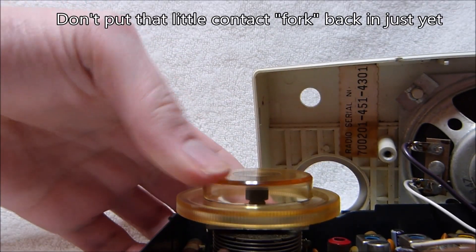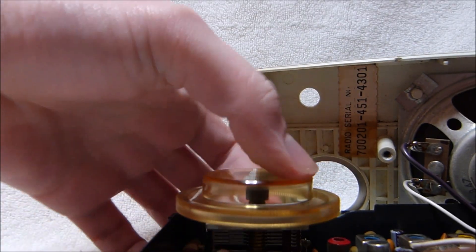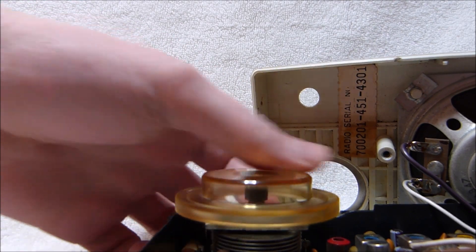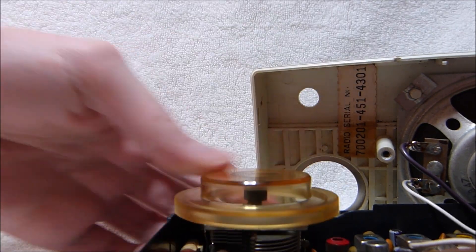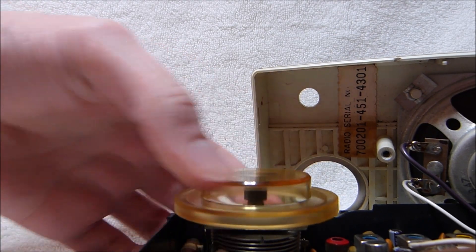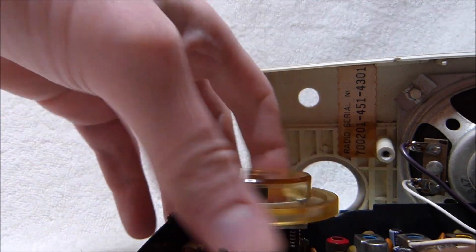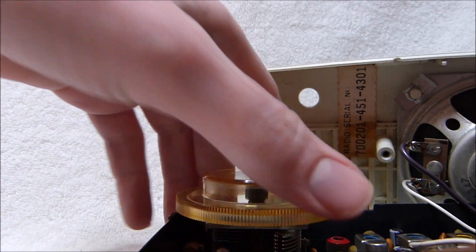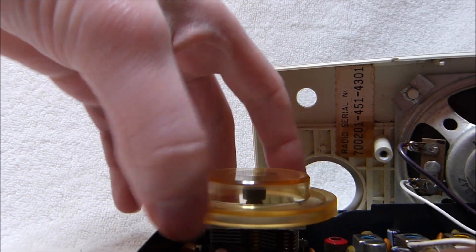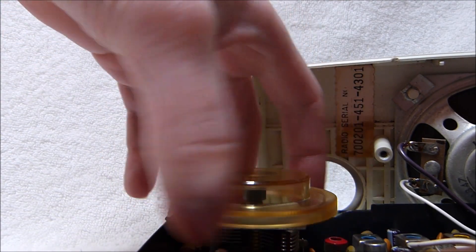Then work it back and forth to work that fresh oil down into the lower bearing, and dislodge any crud in there. This is moving pretty nicely now. It could maybe be a little bit looser, but it's pretty good right now.